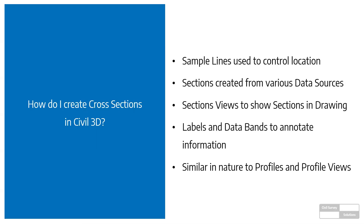Section Views are the mechanism by which you see the actual cross-section in the drawing. It's almost like a localized inversion of model space where the x-axis is the left and right from your centerline, and the up-and-down z-axis becomes visible. We invert space in the Section View so you can see your offset and elevation, and then annotate that using a combination of labels and what's called data bands.